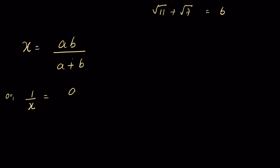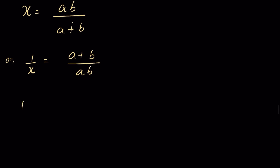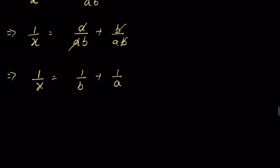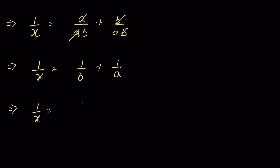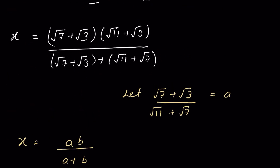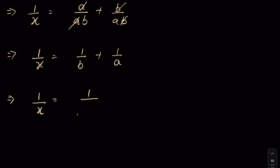Taking the reciprocal: 1/x = (a + b)/(ab). With ab as the common denominator, we write 1/x = a/(ab) + b/(ab), which simplifies to 1/x = 1/b + 1/a. Substituting back: 1/x = 1/(√11 + √7) + 1/(√7 + √3).